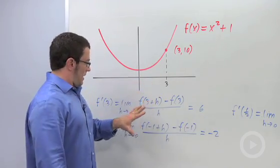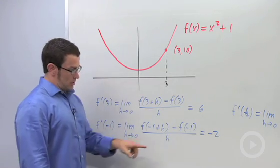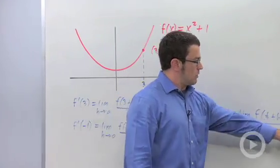Now, it turns out you could do that at pretty much any point. You can find the derivative at negative 1. It turns out to be negative 2. And you can find the derivative at a half, and it turns out to be 1.